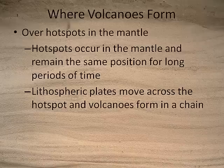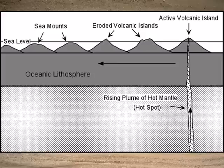Then the plate moves a little bit, the volcano that was formed goes extinct, and the hot spot punches a new hole in the plate and creates a new volcano. This produces a whole chain of volcanic islands if the hot spot occurs in the ocean.